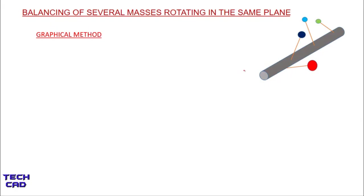On the right side of the screen you can see this figure — a shaft is rotating with some angular velocity and four masses are attached to the shaft. The masses may be m1, m2, m3, m4 and the angles with respect to the axis of the shaft are also given when you are going to solve the question.